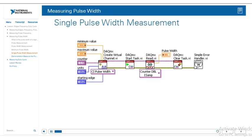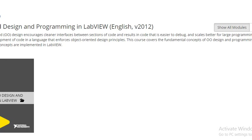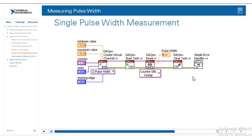Let's look at how to use the DAQmx API to measure pulse width. The first thing you do is use the DAQmx Create Virtual Channel with the type of CI pulse width — the counter input pulse width. Make sure you set your minimum and maximum values of the unknown pulse as accurately as possible, because this allows NI DAQmx to choose the best internal time base for your application. From there, start the task, read the pulse width, and at the end, always clear the task and check for errors.